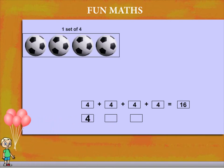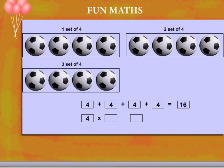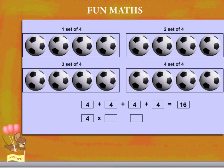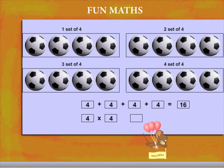Here is one set of 4 balls. 2nd set, 3rd set and 4th set. So, 4 times 4 or 4 multiplied by 4 is equal to 16.